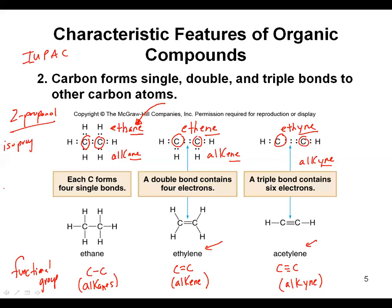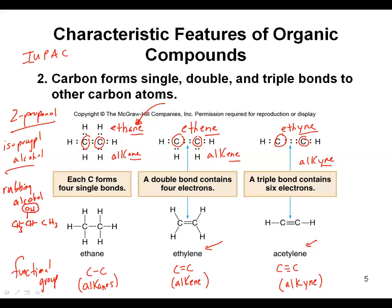For example, 2-propanol is the same as isopropyl alcohol, which is also what we know as rubbing alcohol. All three of those names represent the same thing. As a little preview, what makes this compound an alcohol is it has an OH group on it — and that's the functional group for an alcohol. Just these slight little changes in compounds basically give you different organic compounds with different properties.